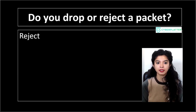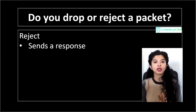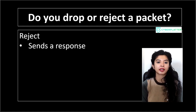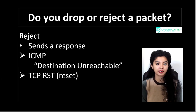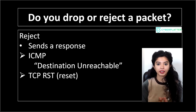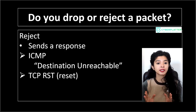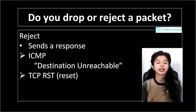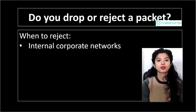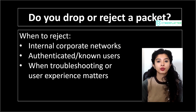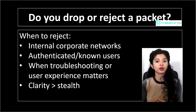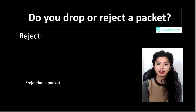Now let's go to the concept of rejecting a packet. When a firewall rejects a packet, it still blocks the traffic, but this time it actually sends a response back to the sender. This response could be something like an ICMP destination unreachable message or a TCP reset message. In other words, the firewall is saying: I got your request, but you're not allowed to access this. The sender receives immediate feedback and knows right away that the connection is blocked, instead of waiting for a timeout. When do we usually reject packets? Inside corporate networks where users are trusted, when dealing with authenticated or known clients, during troubleshooting where quick feedback helps, or when user experience matters — anytime clarity is more important than hiding information.